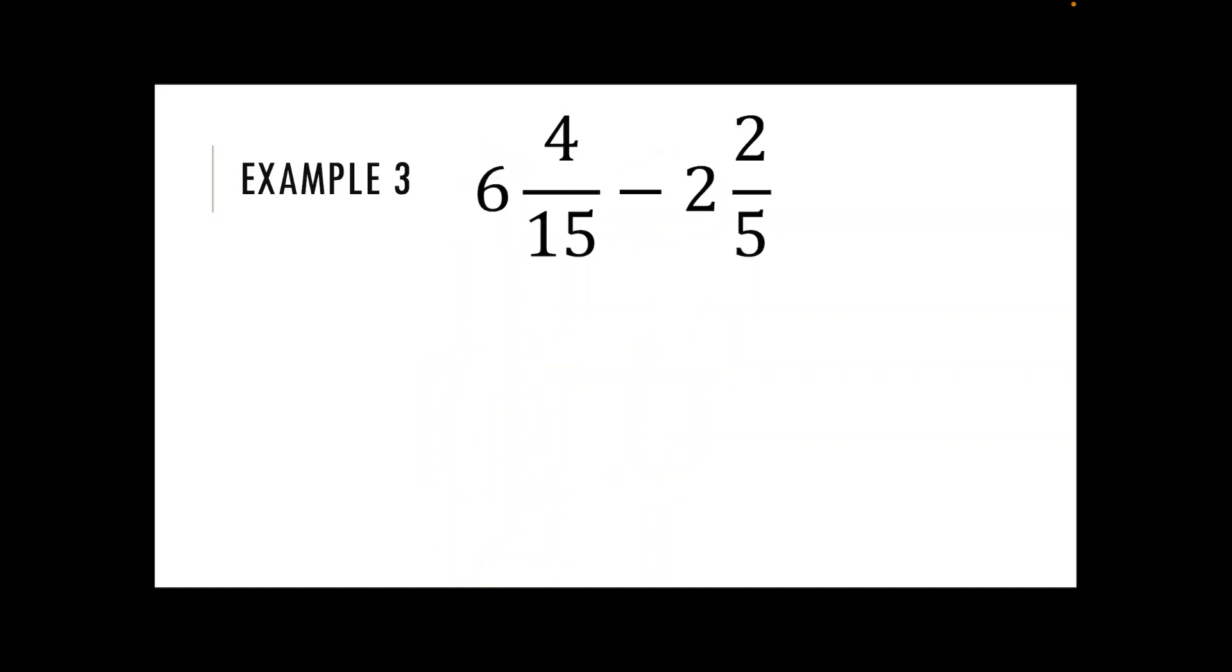For example three, same idea. So six take away two is going to leave me with four and I've got four fifteenths take away the two fifths. We're going to want to multiply by three for this example to get my five up to fifteen. Four and four fifteenths then take away six fifteenths.